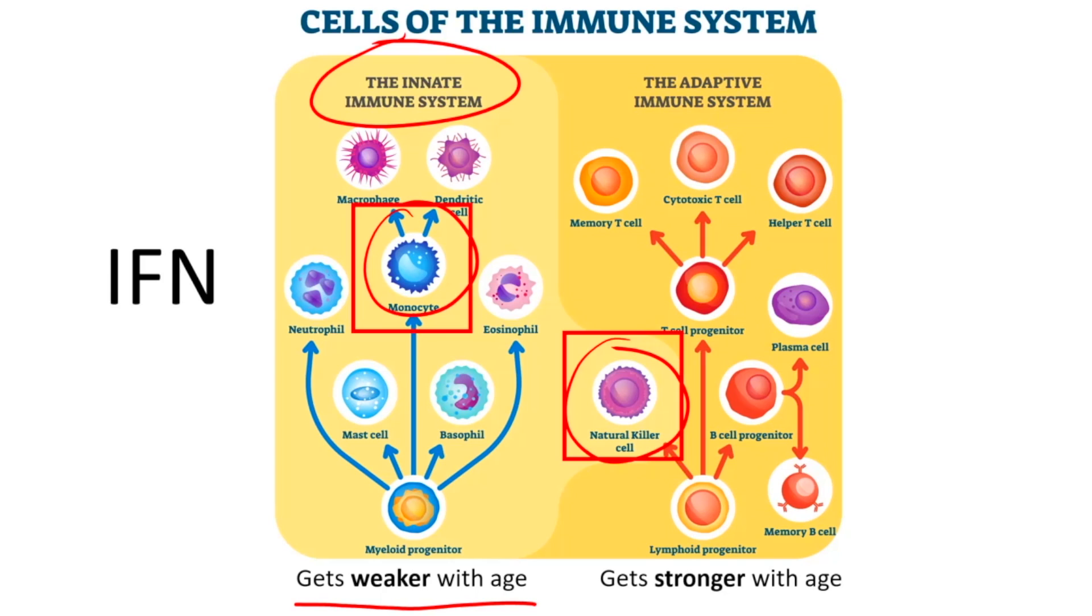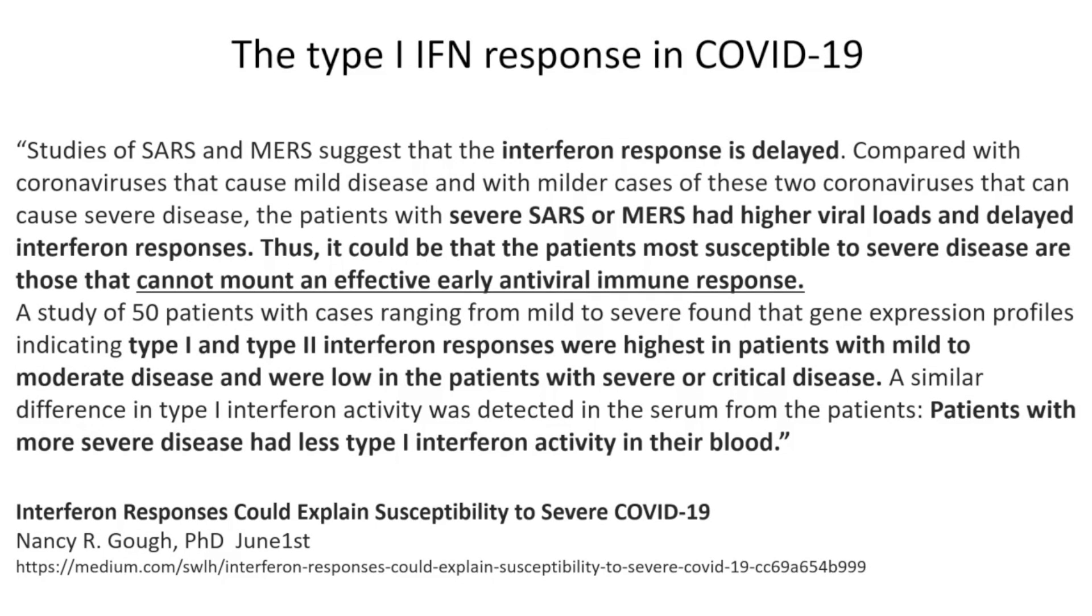And this is not new. For those who have watched MedCram, they will know that we've talked about this before. You can see here in a letter that was written by Nancy Goh, she writes here, Studies of SARS and MERS suggest that the interferon response is delayed. Compared with coronaviruses that cause mild disease and with milder cases of these two coronaviruses that can cause severe disease, the patients with severe SARS or MERS had higher viral loads and delayed interferon responses. So let's just pause right there. In comparison to our NL63 coronavirus, which just affects the lungs, this is one of those mild cases. They don't seem to delay the interferon response. This is what is being said here in a paper that was published at the beginning of the pandemic. However, there's something about SARS-CoV-2 that delays the innate immune response. Could it be that the reason why we're seeing a difference between SARS-CoV-2 spike protein and the ML63 spike protein is that there's something about the SARS-CoV-2 spike protein that is delaying the innate immune response?